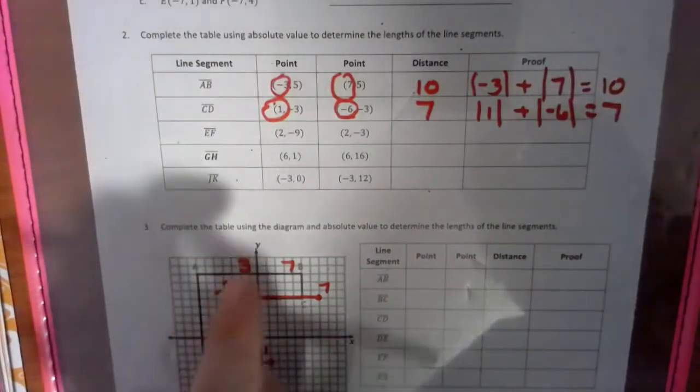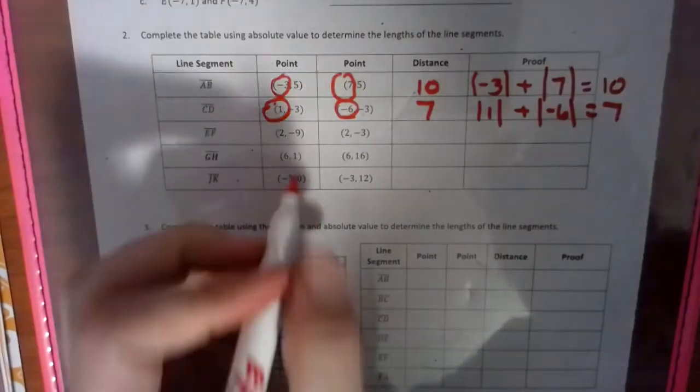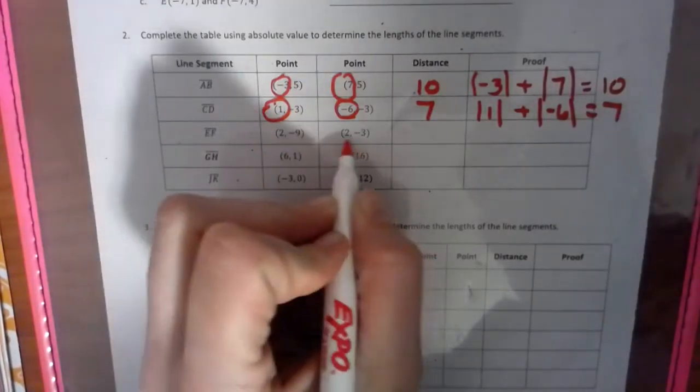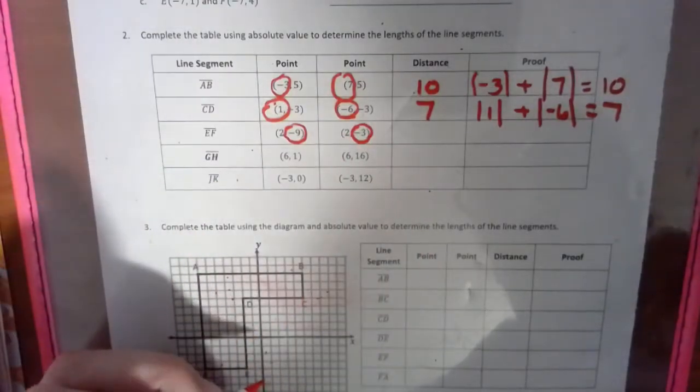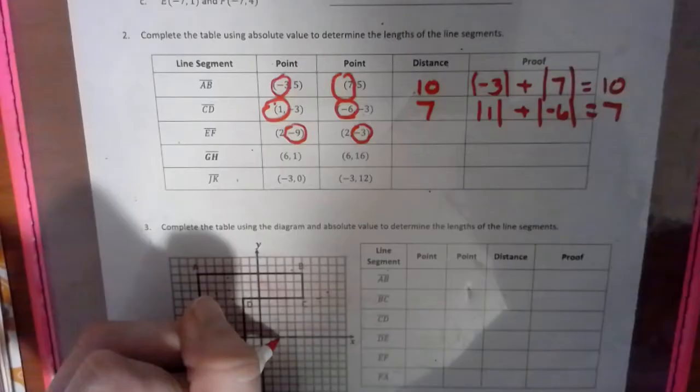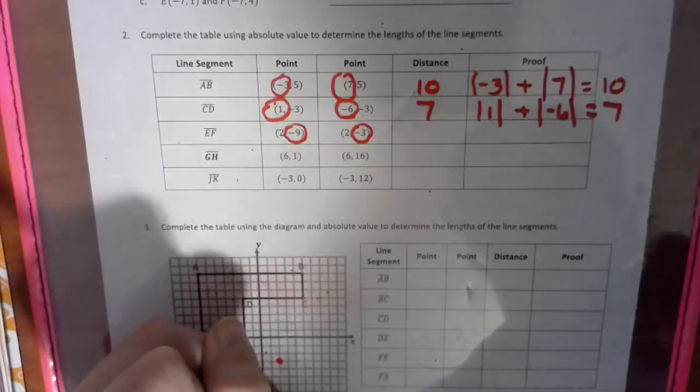All right, so now if you notice this next one, I'm going to get rid of these so it's a little bit easier to look at. These are the same x's, so that means we're going to be looking at the y values to find their jump, and that means we have over 2, down 1, 2, 3, and we also have over 2, down 3, 4, 5, 6, 7, 8, 9.